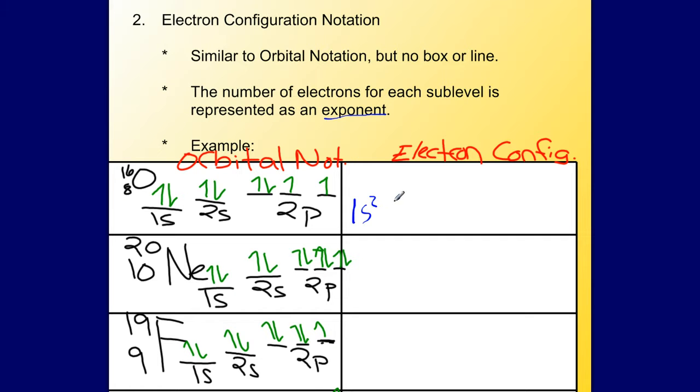Next I have 2s that has 2 electrons. And then 2p, which has 1, 2, 3, 4 electrons, so it would be 2p4.